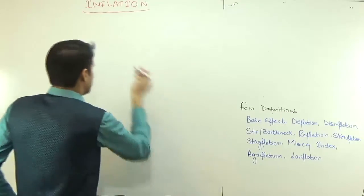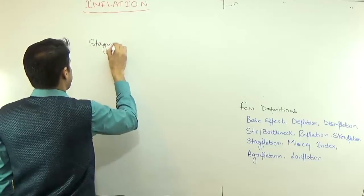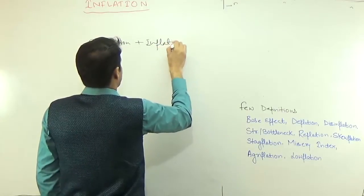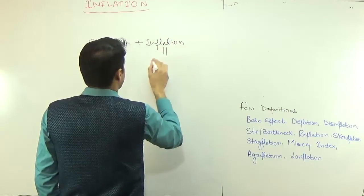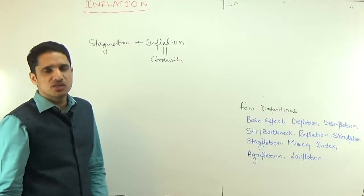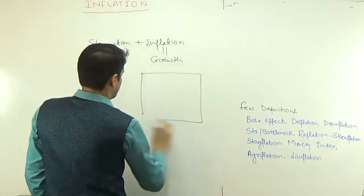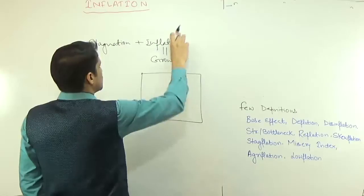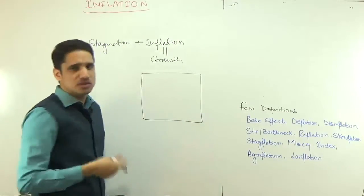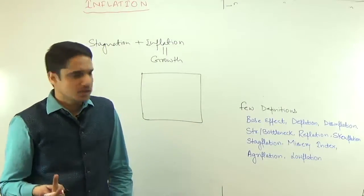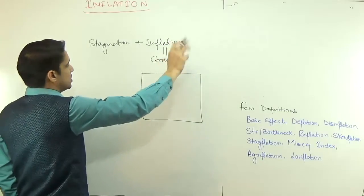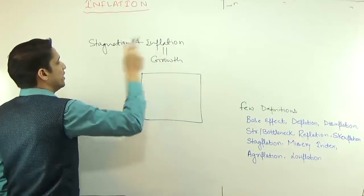Then we have stagflation — stagnation plus inflation. We discussed that inflation is usually coupled with growth. But think about a situation when there is no growth in the economy, no demand, no increase in money supply — there should not be any inflation. So if growth is not there but still there is inflation, how is that possible?